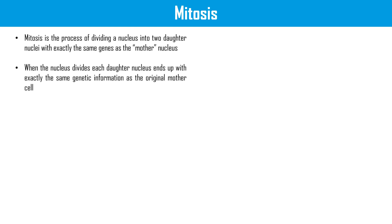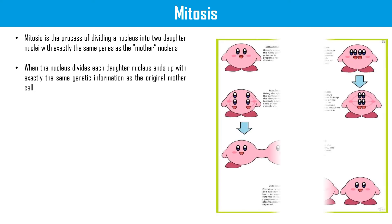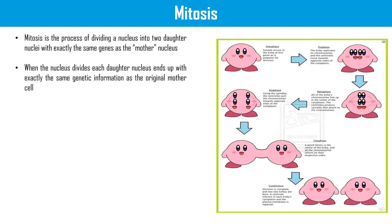Mitosis is the process of dividing a nucleus into two daughter nuclei with exactly the same genes as the mother nucleus. When the nucleus divides, each daughter nucleus ends up with exactly the same genetic information as the original mother cell. The phases of mitosis include interphase, prophase, anaphase, metaphase, telophase, and then cytokinesis.